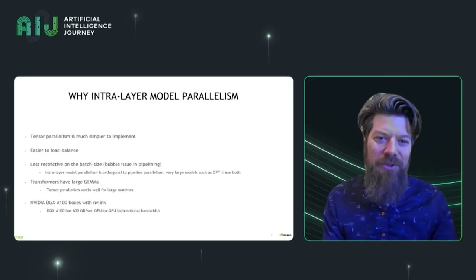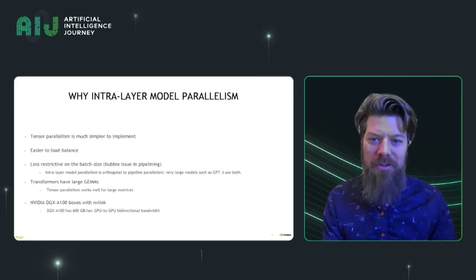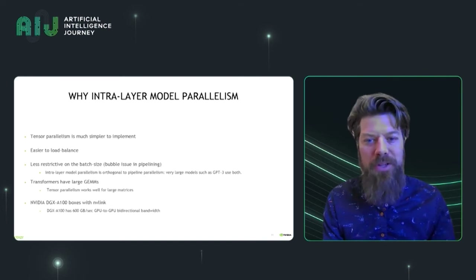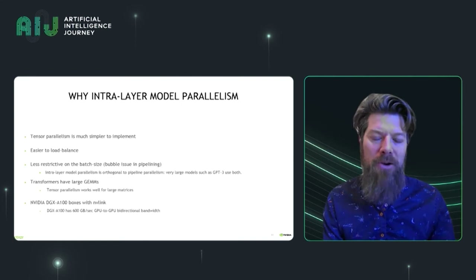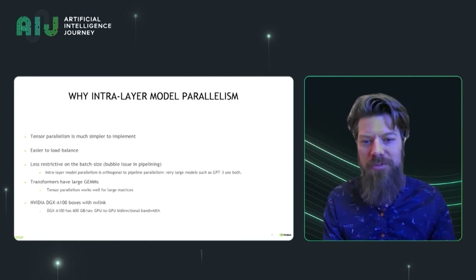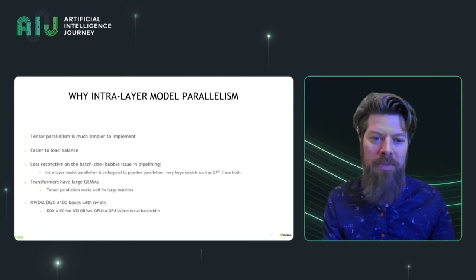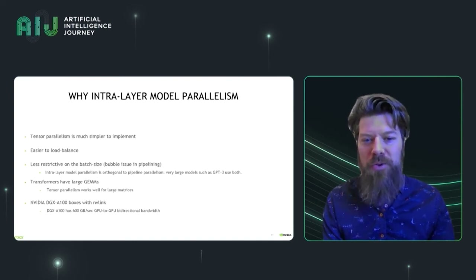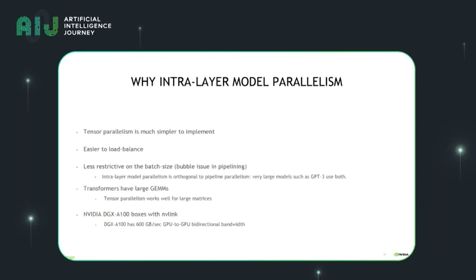Why do we use tensor model parallelism — this intralayer model parallelism? It turns out it's simple to implement and easy to load balance compared with other types of model parallelism. It also has less implications for the batch size because there's no pipeline bubble. You can use both intralayer model parallelism as well as pipeline parallelism. Because these large transformer models have matrix multiplies that are very large, splitting the matrix multiply is actually a good idea, and it is possible because we have very high bandwidth interconnects between GPUs inside our NVLink-connected machines.